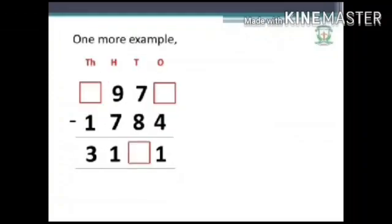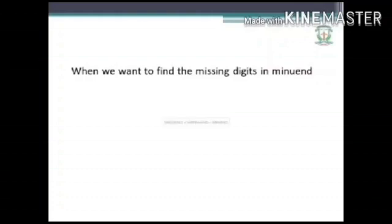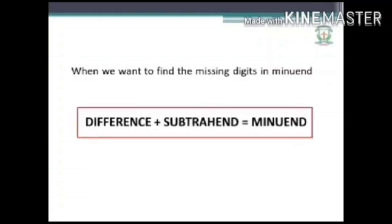Let us take up one more example. Here you can see some of the minuend digits are missing and one of the difference digits is missing. When we want to find the missing digits in the minuend, the formula to be followed is: difference plus subtrahend is equal to minuend.